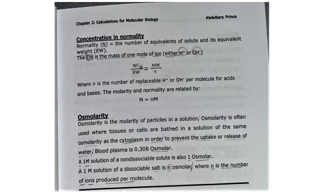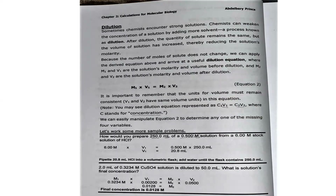Sometimes chemists need to weaken the concentration of a solution by adding more solvent, a process known as dilution. After dilution, the quantity of solute remains the same, but the volume of solution has increased, thereby reducing solution molarity. Because the number of moles of solute doesn't change, we can apply the derived equation and arrive at a useful dilution equation, where M1 and V1 are the solution molarity and volume before dilution, and M2 and V2 are the solution molarity and volume after dilution. It is important to remember that the units of the two volumes must remain consistent — V1 and V2 must have the same volume unit in the equation.